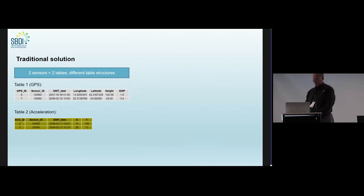So, the traditional solution would be, or is currently, if you have two sensors in a traditional system, you build two different tables with two different structures. So, for example, the first table would be a GPS table, giving you longitude, latitude, and height, and the acceleration table, giving you the X and Y acceleration. Two different structures in the database.